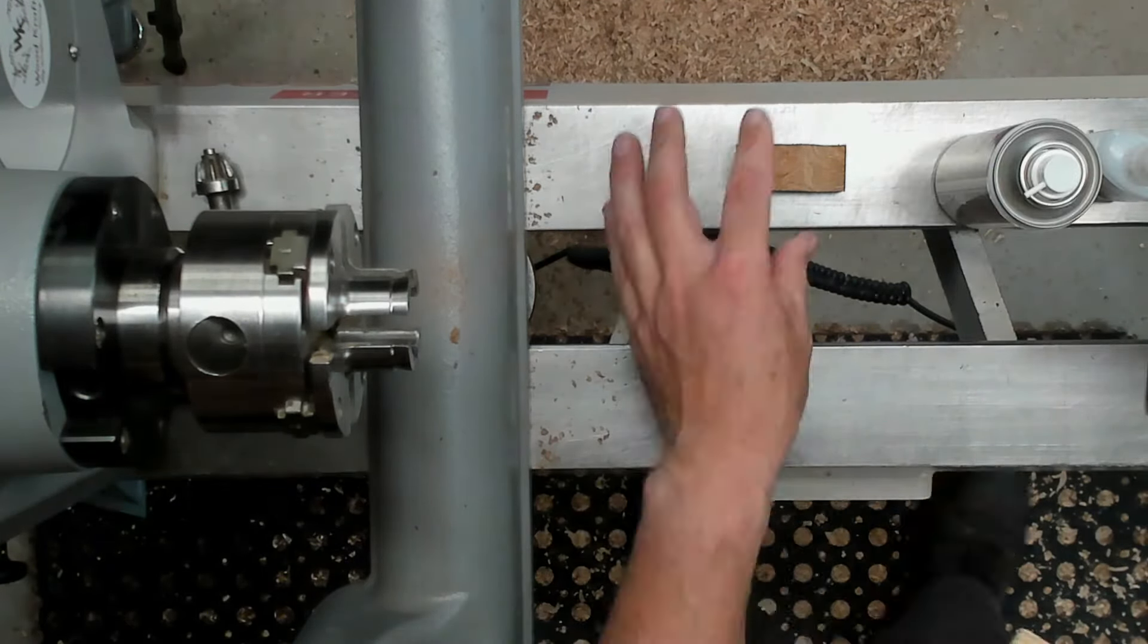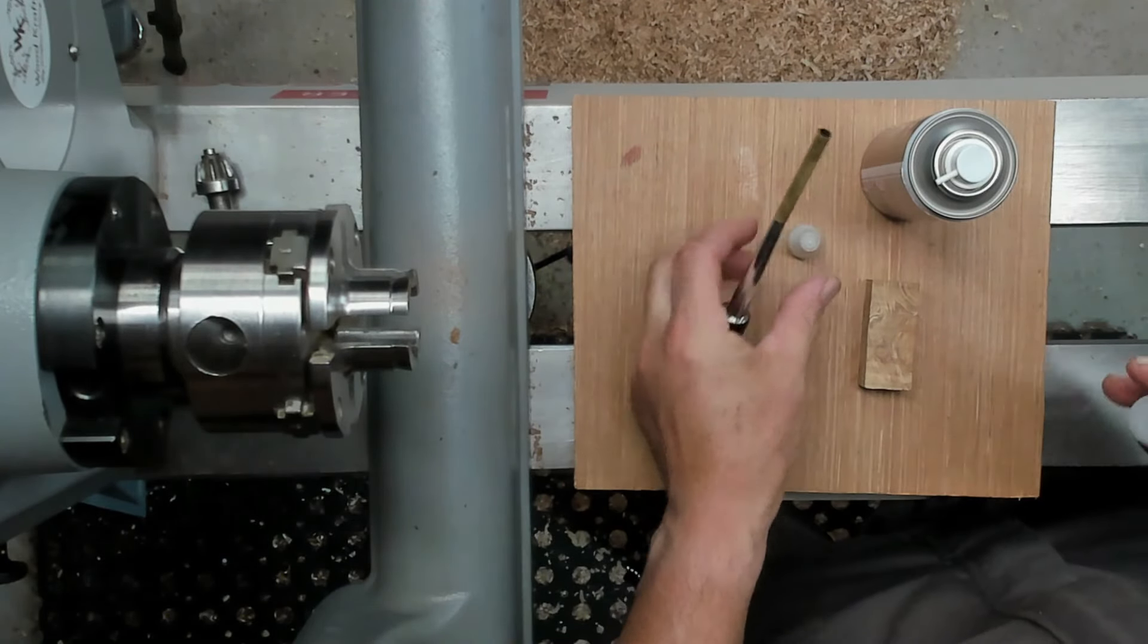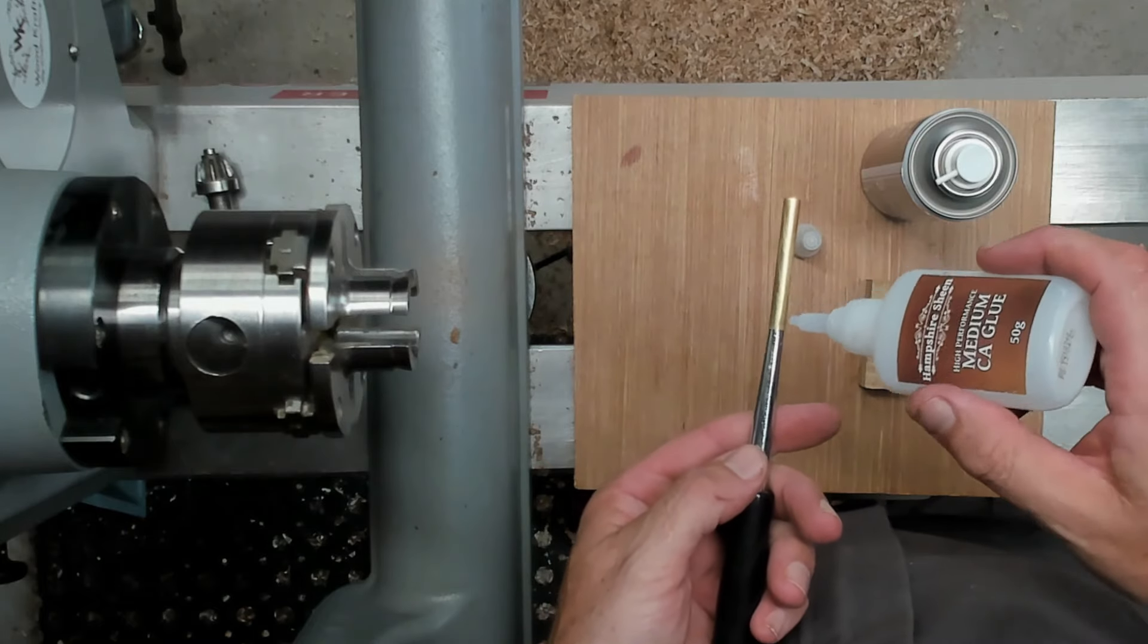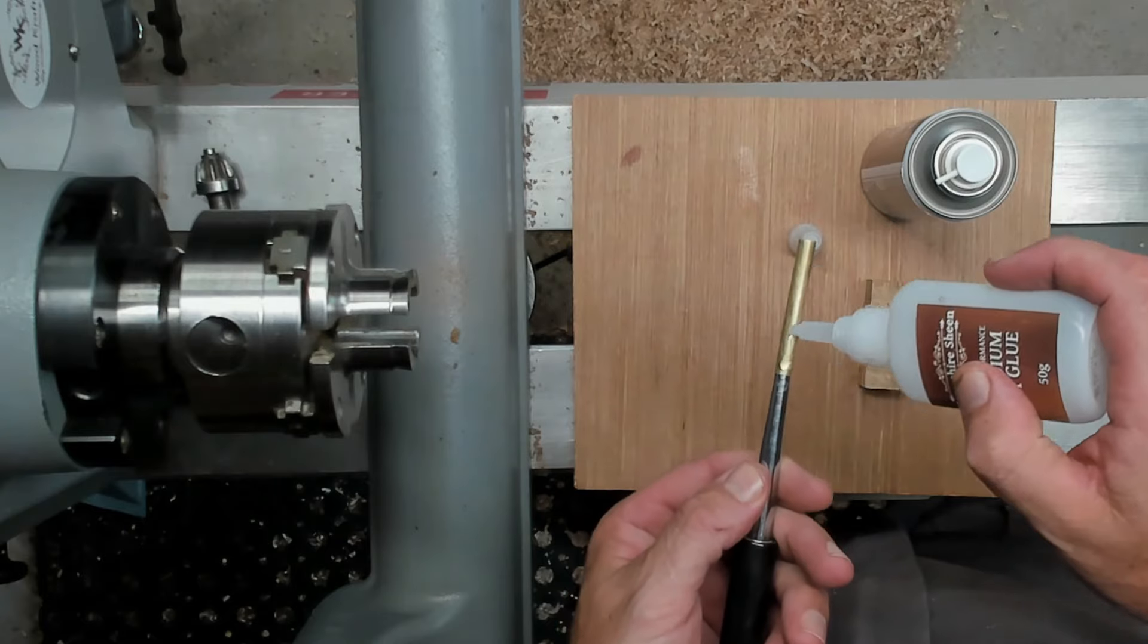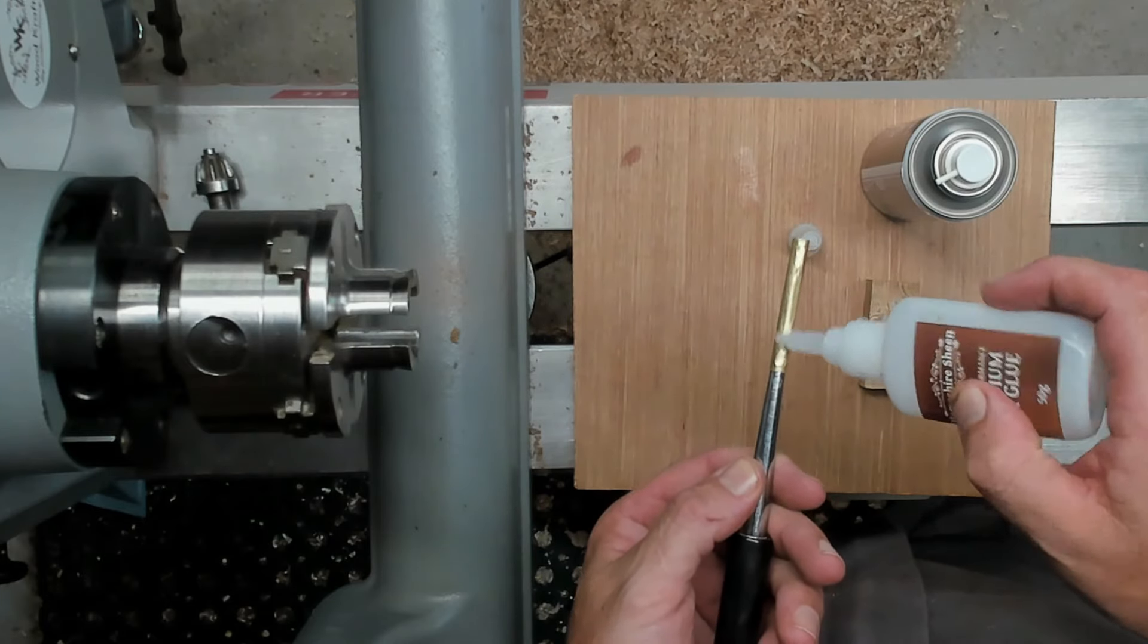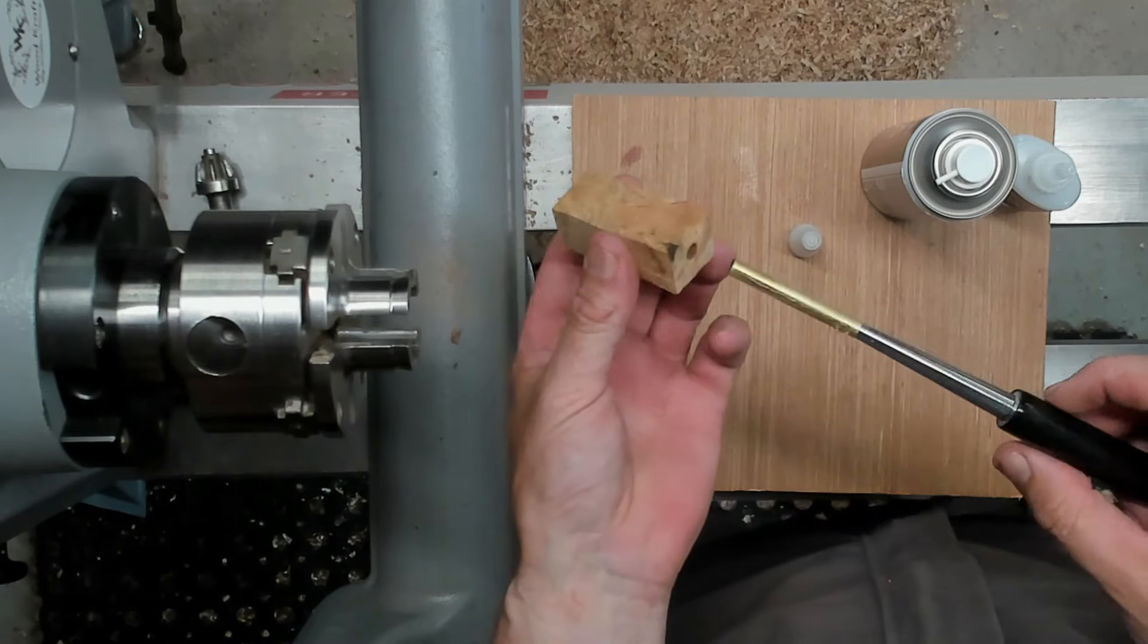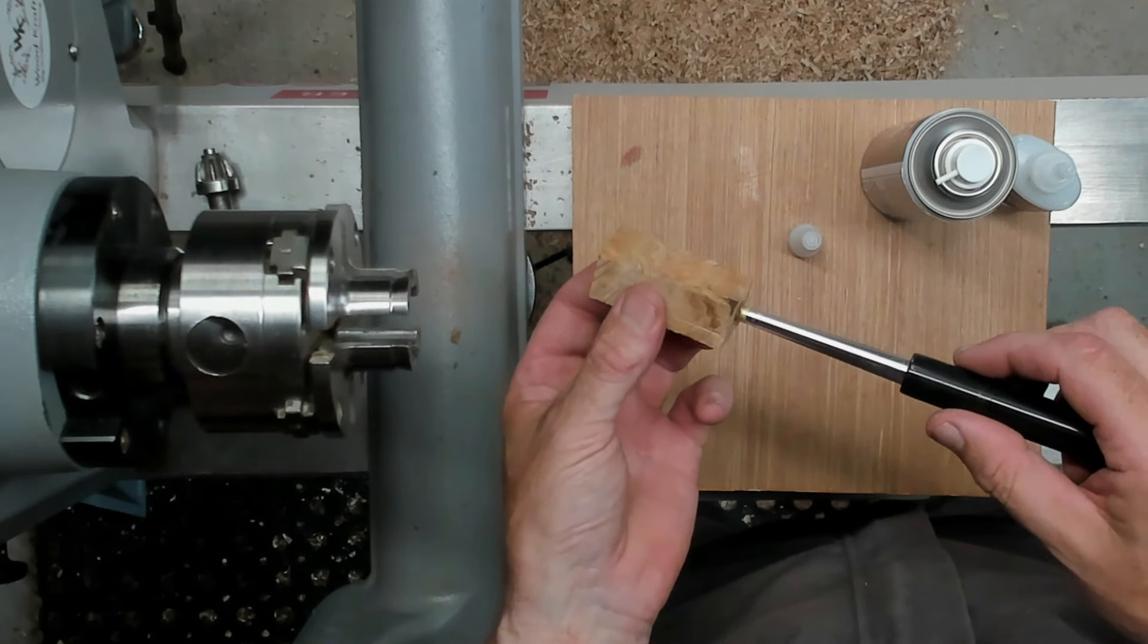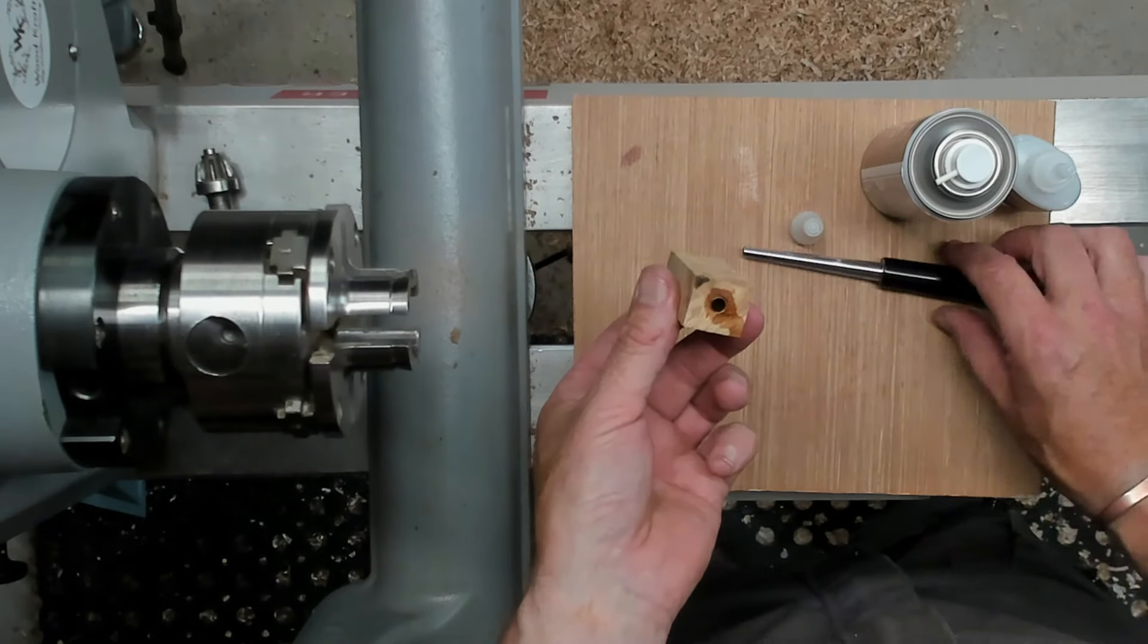Stick that into the four jaw chuck. What you will need is a Jacobs chuck and a 7mm drill bit. I always drill at around 500 RPM, which is loads.